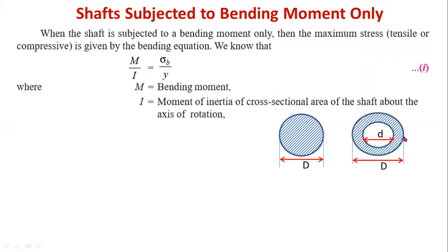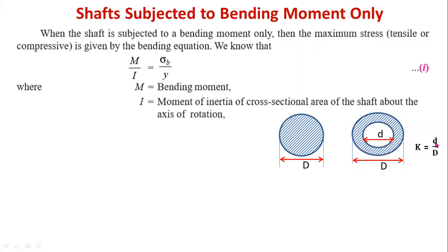For a solid shaft, capital D is the outer diameter. For a hollow shaft, capital D is the outer diameter and small d is the inner diameter. K is the diameter ratio, defined as K = d/D — that is, inner diameter divided by outer diameter.